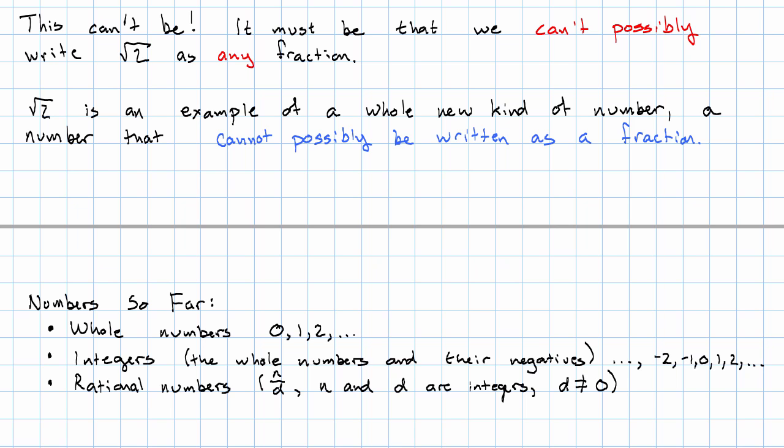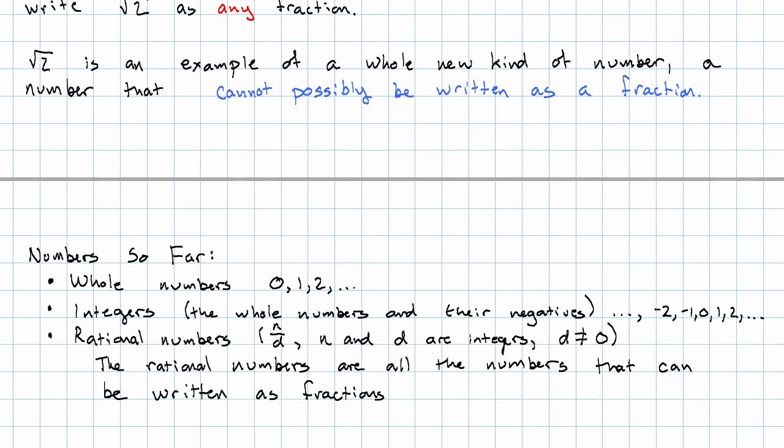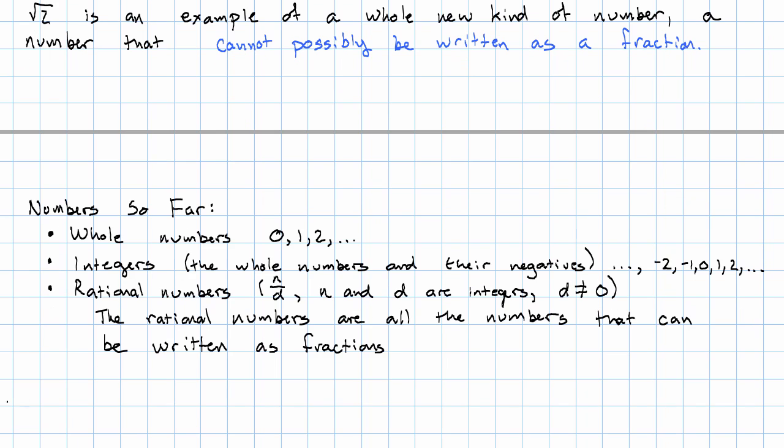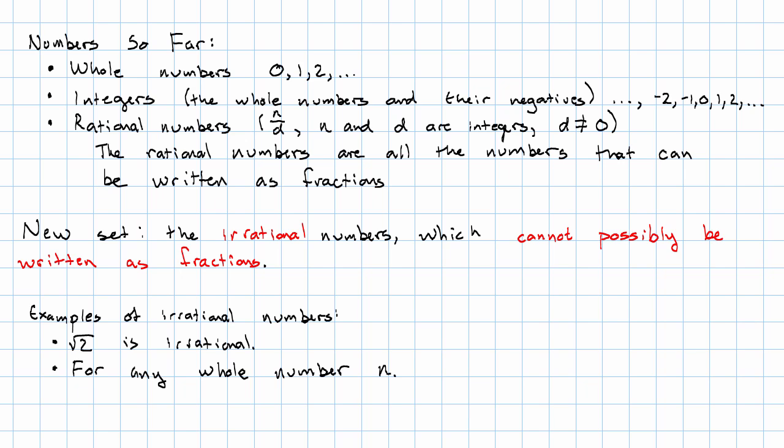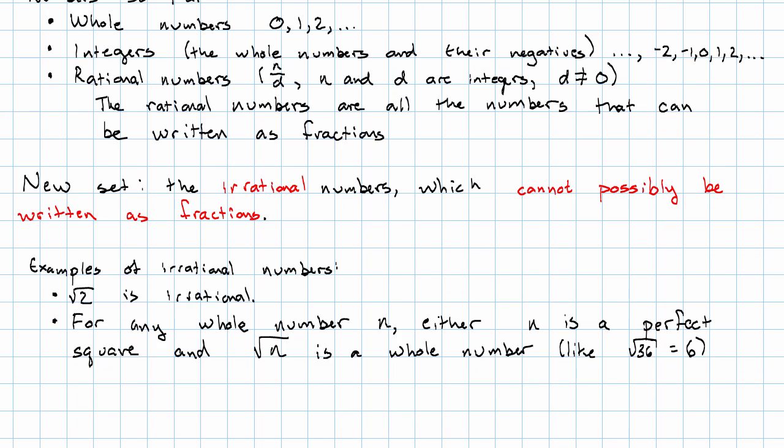Those are all of the numbers that can be written as fractions, and that included certain decimals. We'll see more about that in the next video. But now we have a whole new family of numbers. They're the numbers that cannot possibly be written as fractions. So far, the example we have is square root of 2. And by basically the same argument we just gave for 2, for any whole number, either it's a perfect square and its square root is a whole number, like the way that the square root of 36 is 6, or the square root of n is irrational.